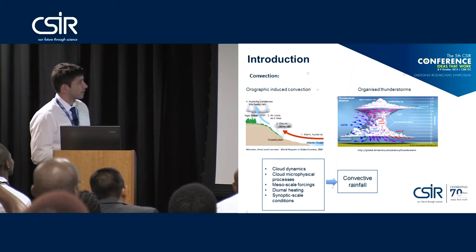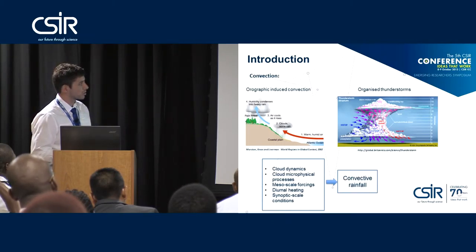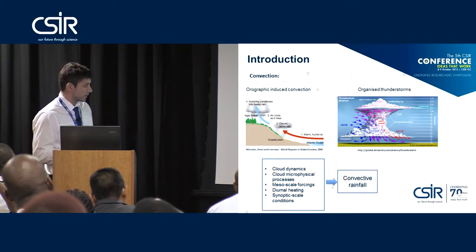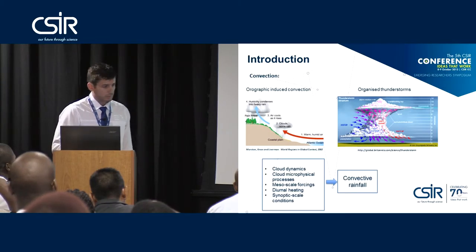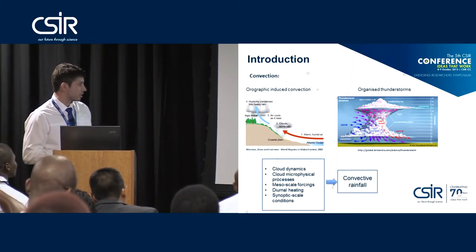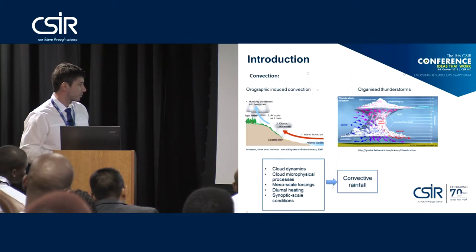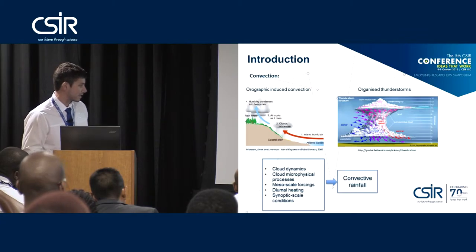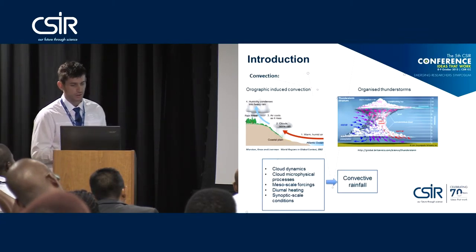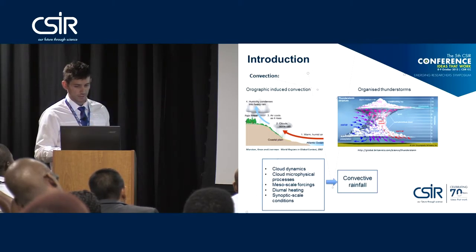Another system we normally see, which is more frequent on the highveld, is organized thunderstorms. Convective rainfall in South Africa occurs as a result of different things acting together — for example, cloud dynamics, cloud microphysical processes, mesoscale forcings, diurnal heating, and synoptic scale conditions. All of this feeds into how we model convective rainfall.